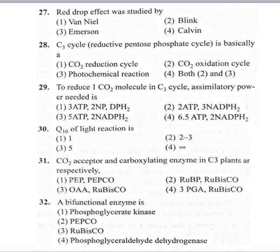Coming to the 27th bit: red drop effect was studied by option 1 Vanille, option 2 Blink, option 3 Emerson, option 4 Calvin. First of all, you should understand what red drop effect is. Emerson was one of the scientists who performed experiments in Chlorella and found the rate of photosynthesis at different wavelengths. The rate of photosynthesis is usually measured in quantum yield.